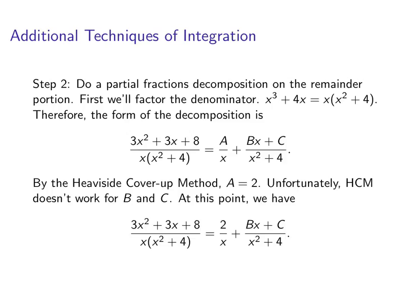So, what do we do at this point? We're going to take the thing that we're trying to decompose. We'll put the A in. So, 3x^2 + 3x + 8 over x(x^2 + 4) is equal to 2 over x plus Bx + C over x^2 + 4. So, I like to multiply through by x times (x^2 + 4). Let's see what we get.